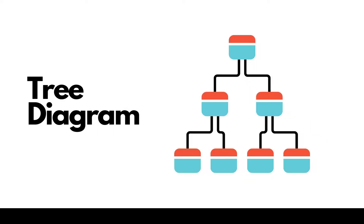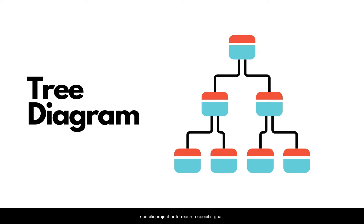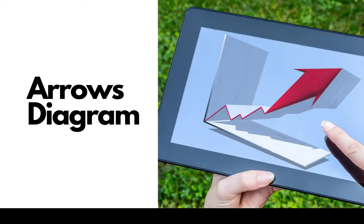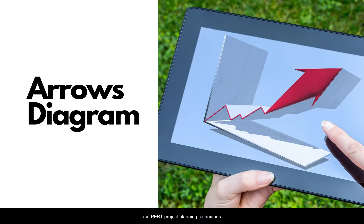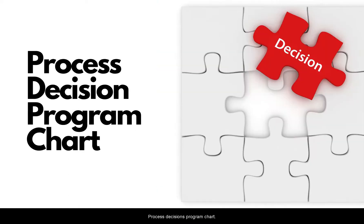Tree diagram: this maps out the paths and tasks that need to be accomplished to complete a specific project or to reach a specific goal. Arrow diagram: these have been used by construction planners for years in the form of CPM and PERT project planning techniques.